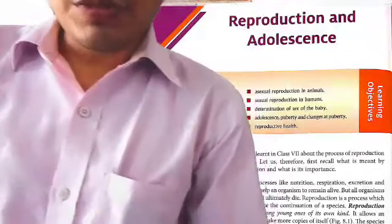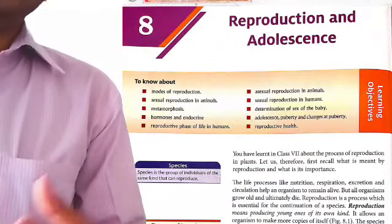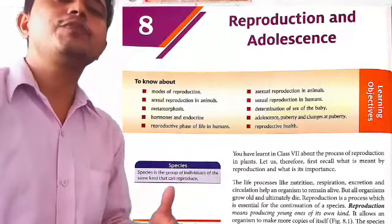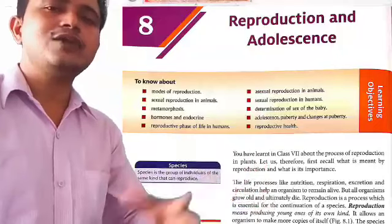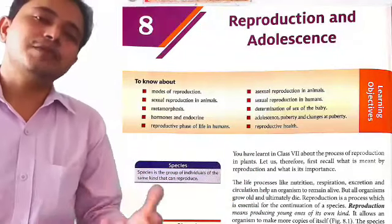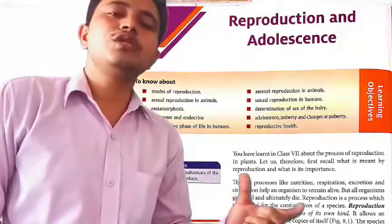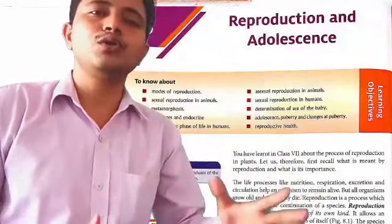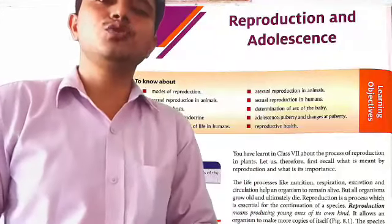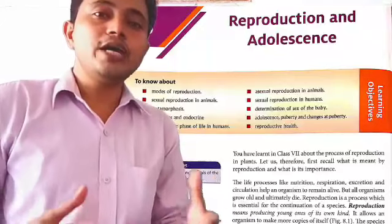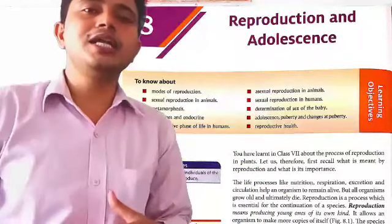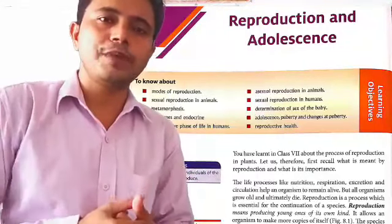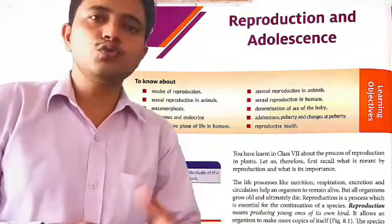But all organisms grow old and ultimately die. Every organism has a lifespan. We can say that every organism has a time span — there is a time to live and a time to die. So, if we don't have reproduction, then we would lose our generations.